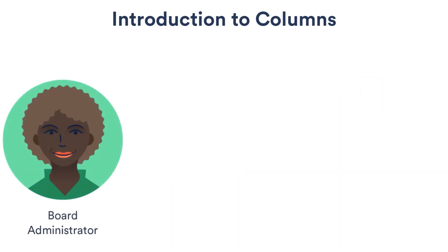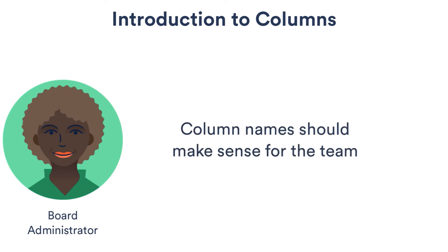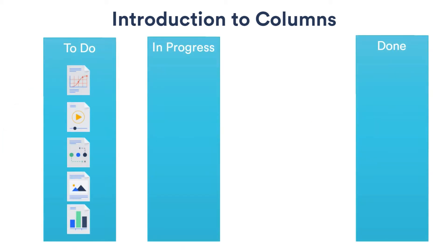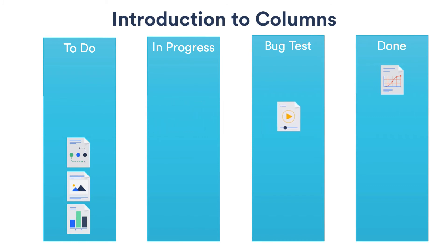Board administrators typically set up the workflow to match their team's work process. They might add or remove columns from the workflow if necessary. They can also give the columns any name that makes sense — column names don't have to be the same as the associated status. On my team, for example, it's important that we review and test any new bug fixes before they go live on our website. In order to make sure each bug is properly resolved we add a QA column to our board. We name that column 'bug test.' By adding this column we're able to track with better precision which bugs have been picked up and worked on by an engineer and which of those bug fixes are ready for review.